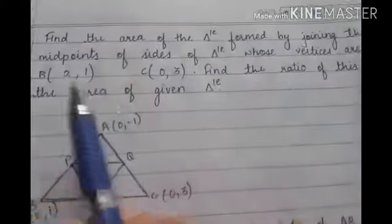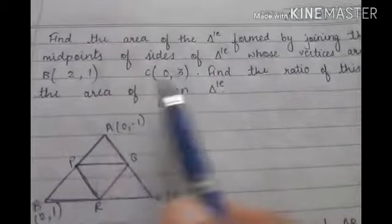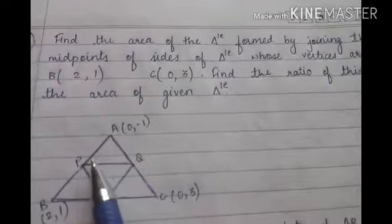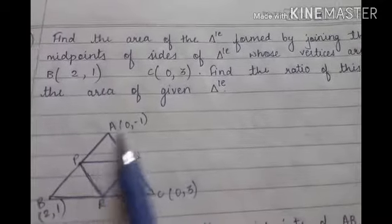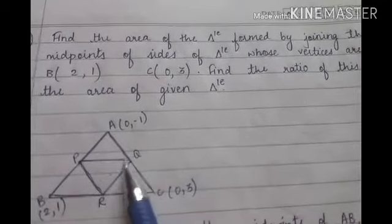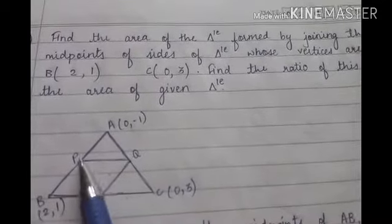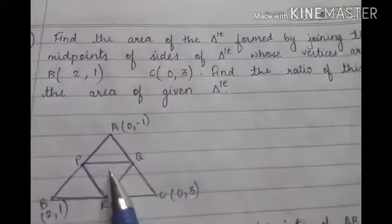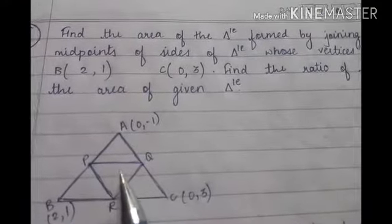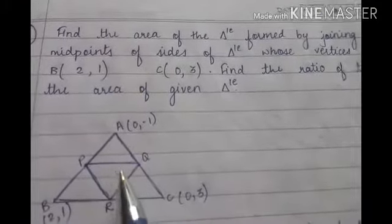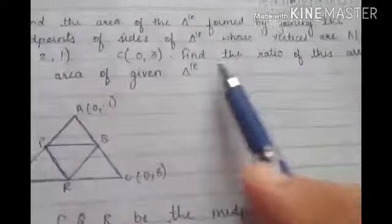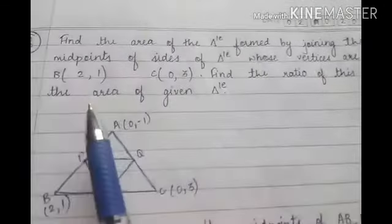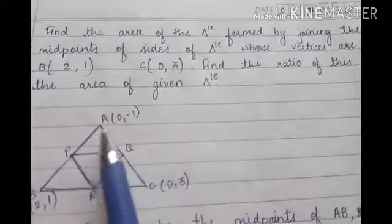Triangle PQR is formed by joining the midpoints P, Q, R of the sides of triangle ABC. We have joined the midpoints and obtained a triangle, and we need to find the area of this triangle PQR. Also, we need to find the ratio of this area to the area of the given triangle ABC.